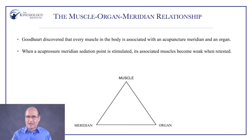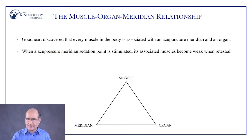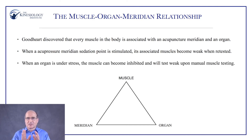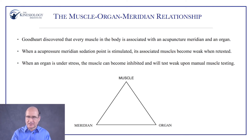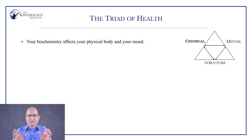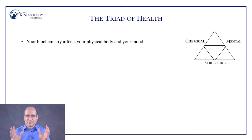When an organ is under stress, the associated muscle can become inhibited and test weak upon manual muscle testing. Goodhart emphasized the triad of health — three aspects we look at: chemical, mental-emotional, and structural. Your biochemistry affects your physical body and your mood. If your hormones or neurotransmitters are imbalanced, your psychological state is affected. Nutritional deficiencies and high levels of heavy metals can cause physical problems such as inflammation, muscle cramps, pain, and dysfunction, as well as psychological disorders.